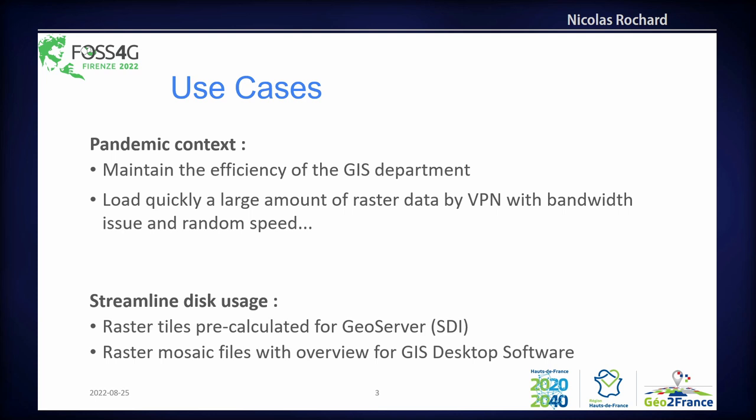The use case arose in the pandemic context, because we needed to maintain the efficiency of GIS departments and load quickly large amounts of raster data over VPN with bandwidth issues and limited random read speeds.